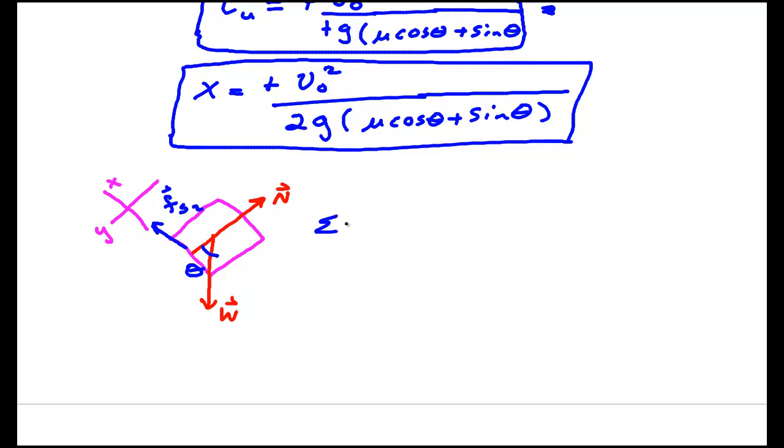So we set about doing Newton's laws again. The sum of the forces is equal to maₓ. Sum of the forces in y is maᵧ. In the x direction, the forces I have: this part of the weight, which would be minus W sin θ.